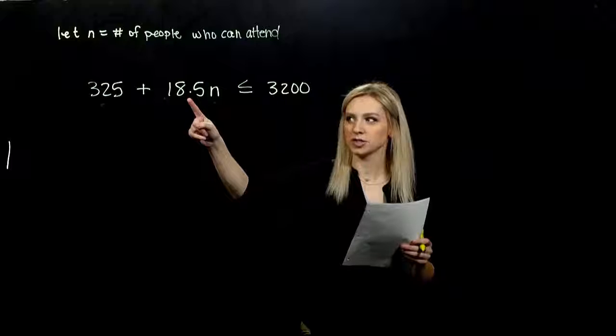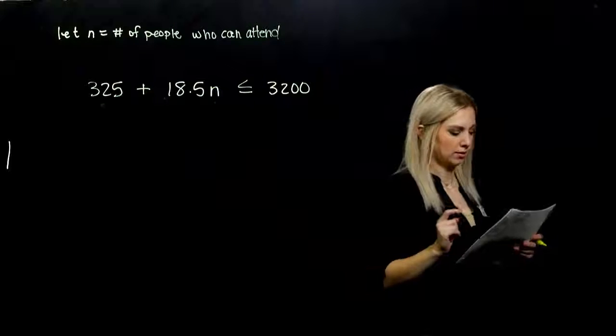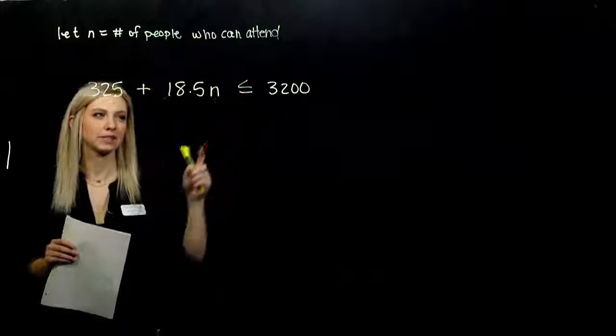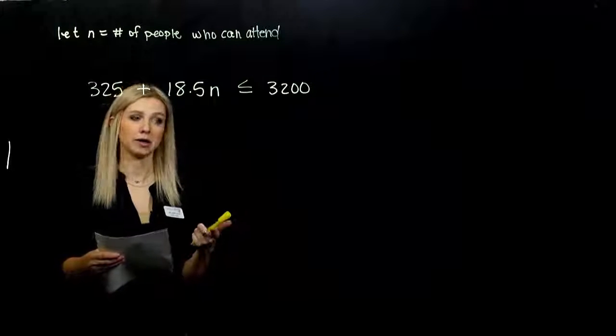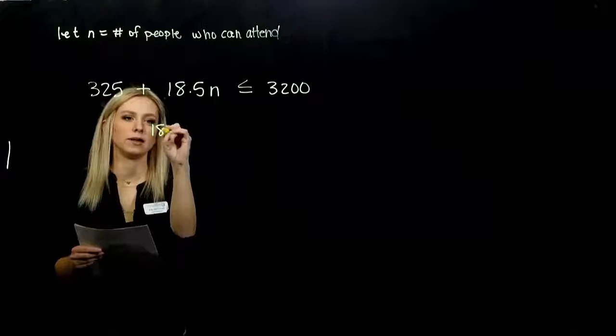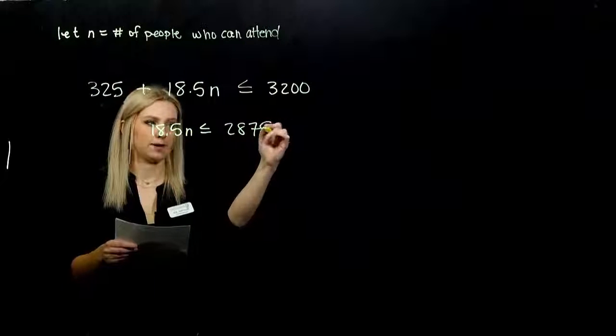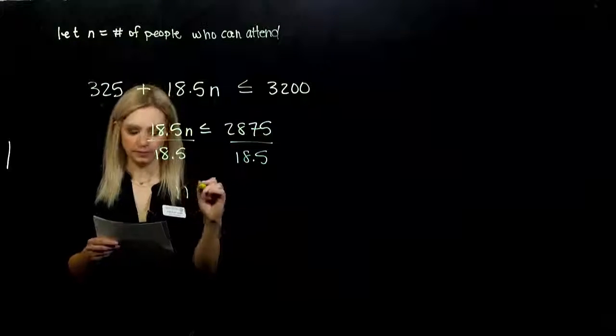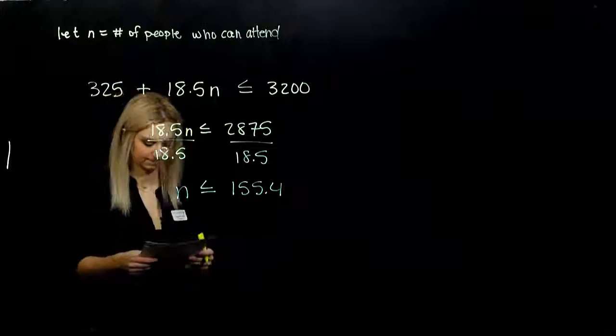Because the flat fee, and then the cost per person times the number of people, so the cost in total for everybody, has to be less than $3,200. So, let's solve. I'm solving for N. I treat the inequality just the same as if it was an equal sign, unless I'm multiplying or dividing by a negative. I need to move $325 to the other side. If I do that, we are looking at $1850N is less than $2875. I'm dividing by a positive, so I don't need to flip any signs. N is less than or equal to 155.4.